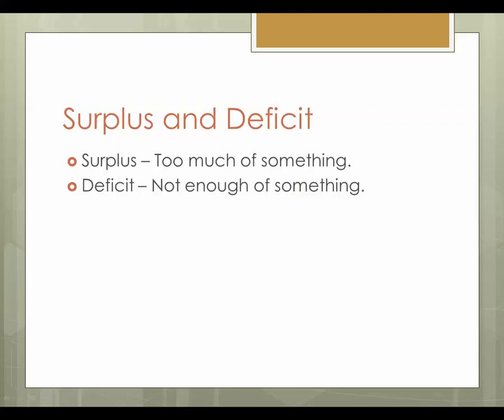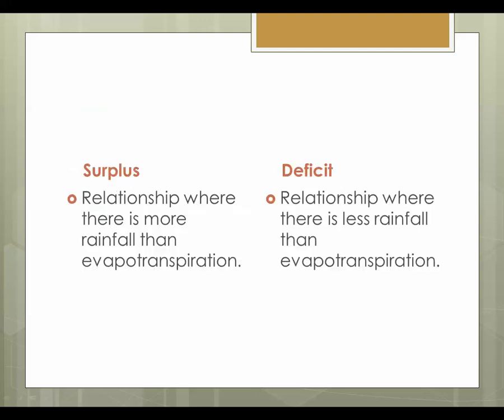First up, key concepts: surplus and deficit. Surplus is having too much, so deficit is not having enough of something, and this becomes particularly prevalent when we look at water. Surplus is a relationship where there is more rainfall than evapotranspiration — evaporation and transpiration. Deficit occurs where there is less rainfall than evapotranspiration.